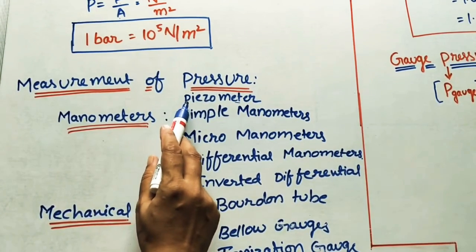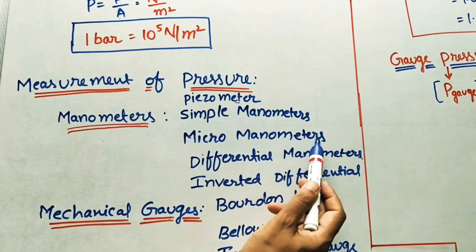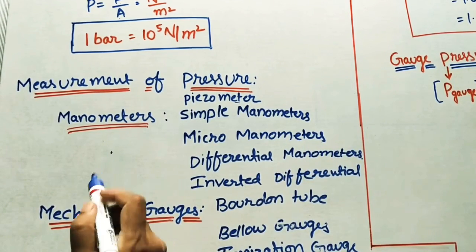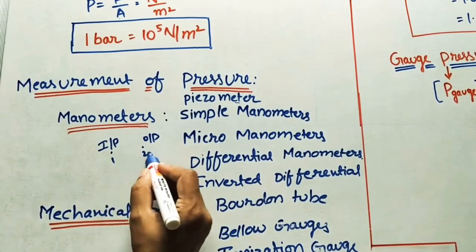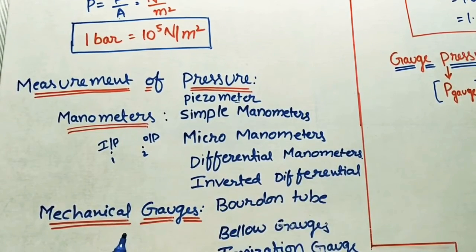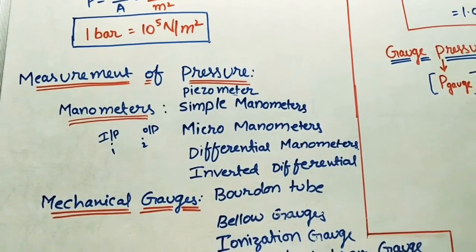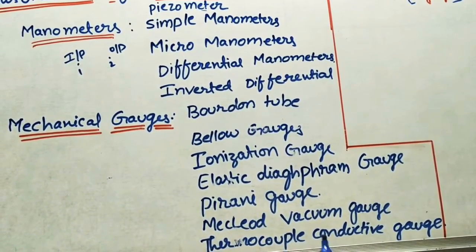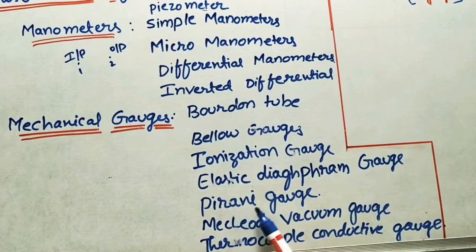For finding pressure at one point, we use piezometers, simple manometers, and micromanometers — vertical type and inclined type. For finding pressure difference between two points (input and output), we use differential manometers, and for correct values, inverted differential manometers. In vehicles and industries, we use mechanical gauges like Bourdon tube pressure gauges, bellows gauges, ionization gauges, elastic diaphragm gauges, Pirani gauges, and McLeod vacuum gauges.